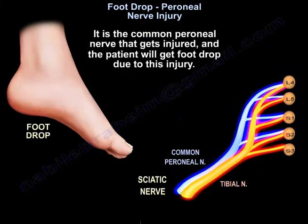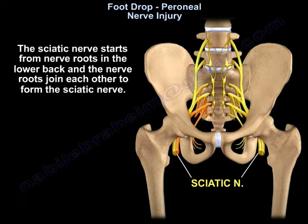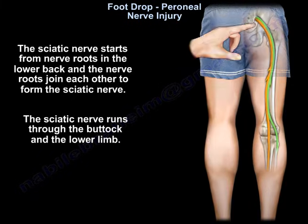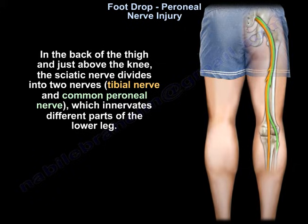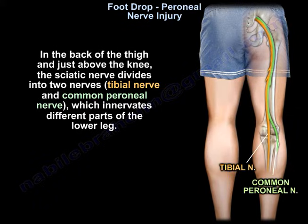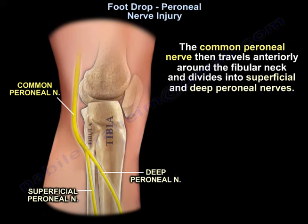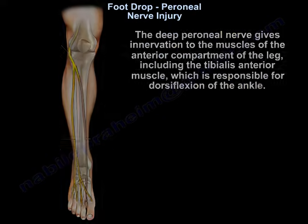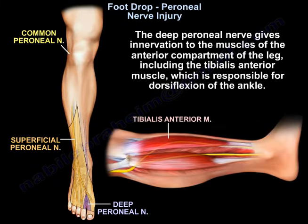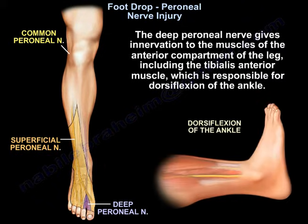It is the common peroneal nerve that gets injured and causes foot drop. The sciatic nerve starts from nerve roots in the lower back, and the nerve roots join each other to form the sciatic nerve. The nerve runs through the buttock and the lower limb. In the back of the thigh and just above the knee, the sciatic nerve divides into two nerves — the tibial and the common peroneal nerves — which innervate different parts of the lower leg. The common peroneal nerve then travels anteriorly around the fibular neck and divides into superficial and deep peroneal nerves. The deep peroneal nerve gives innervation to the muscles of the anterior compartment of the leg, including the tibialis anterior muscle, which is responsible for dorsiflexion of the ankle.